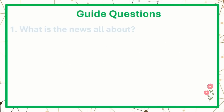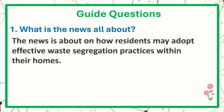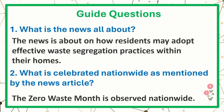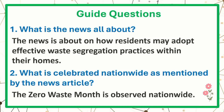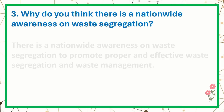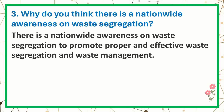Guide questions. What is the news all about? The news is about how residents may adopt effective waste segregation practices within their homes. Number two: what is celebrated nationwide as mentioned by the news article? Zero Waste Month is observed nationwide. Number three: why do you think there is a nationwide awareness on waste segregation? There is nationwide awareness on waste segregation to promote proper and effective waste segregation and waste management.